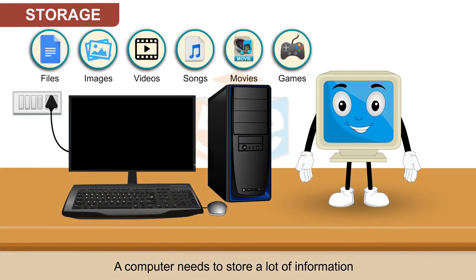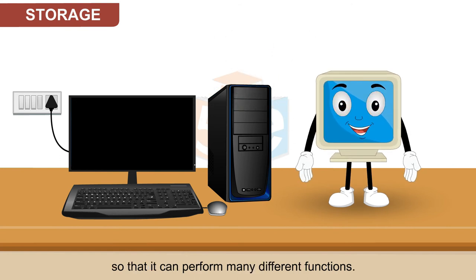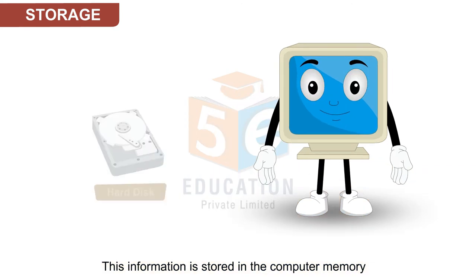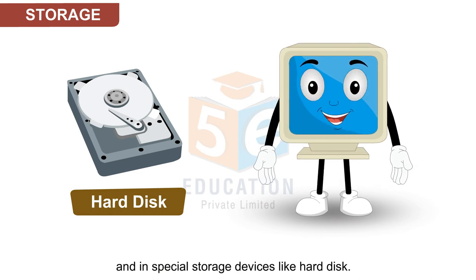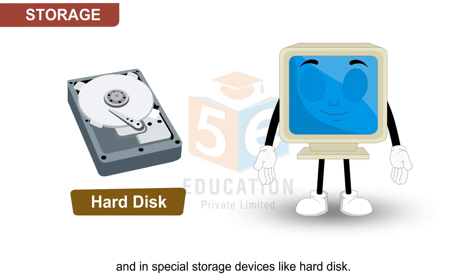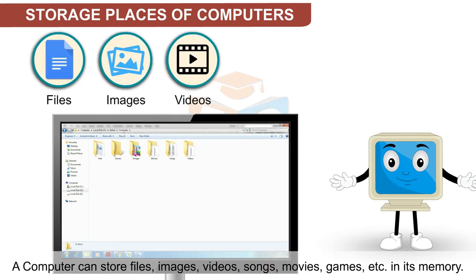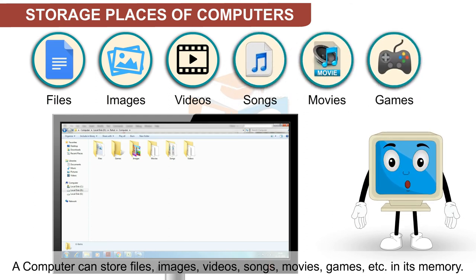A computer needs to store a lot of information so that it can perform many different functions. Hence, storage of information is very necessary for a computer. This information is stored in the computer memory and in special storage devices like hard disk. A computer can store files, images, videos, songs, movies, games, etc. in its memory.